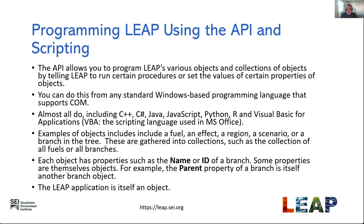You can do this from any standard Windows-based programming language that supports COM — almost all do, including C++, C#, Java, JavaScript, R, Visual Basic for Applications, and others. Examples of LEAP objects include a fuel, an effect, a region, a scenario, or a branch in the LEAP tree. These are gathered into collections such as the collection of all fuels or all branches. Each object has properties such as the name or ID of a branch or fuel. Some properties are themselves objects — for example, the parent property of a branch is itself another branch object. The LEAP application as a whole is also an object.